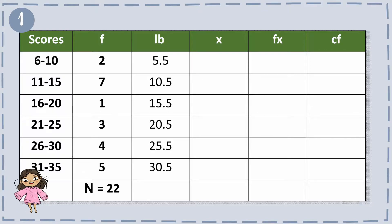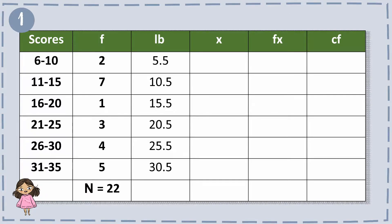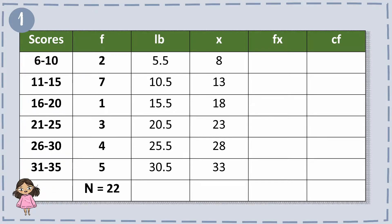Next is for the x, or class mark. In finding x, all we have to do is add the lowest and the highest value in the scores and divide by 2. So we have 6 and 10: 6 plus 10 equals 16, divided by 2 gives 8. Next, 11 plus 15 equals 26, divided by 2 gives 13. The same goes for the rest.